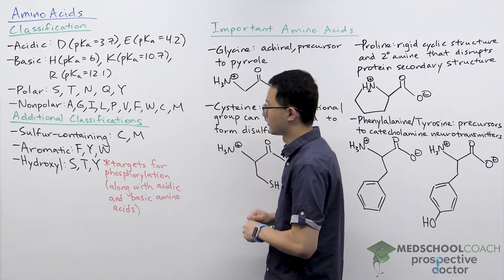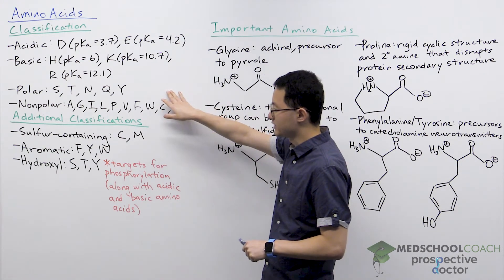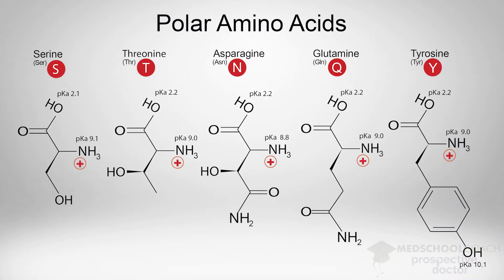For polar amino acids, we have serine, threonine, asparagine, glutamine, and tyrosine. All of these have a polar side chain.